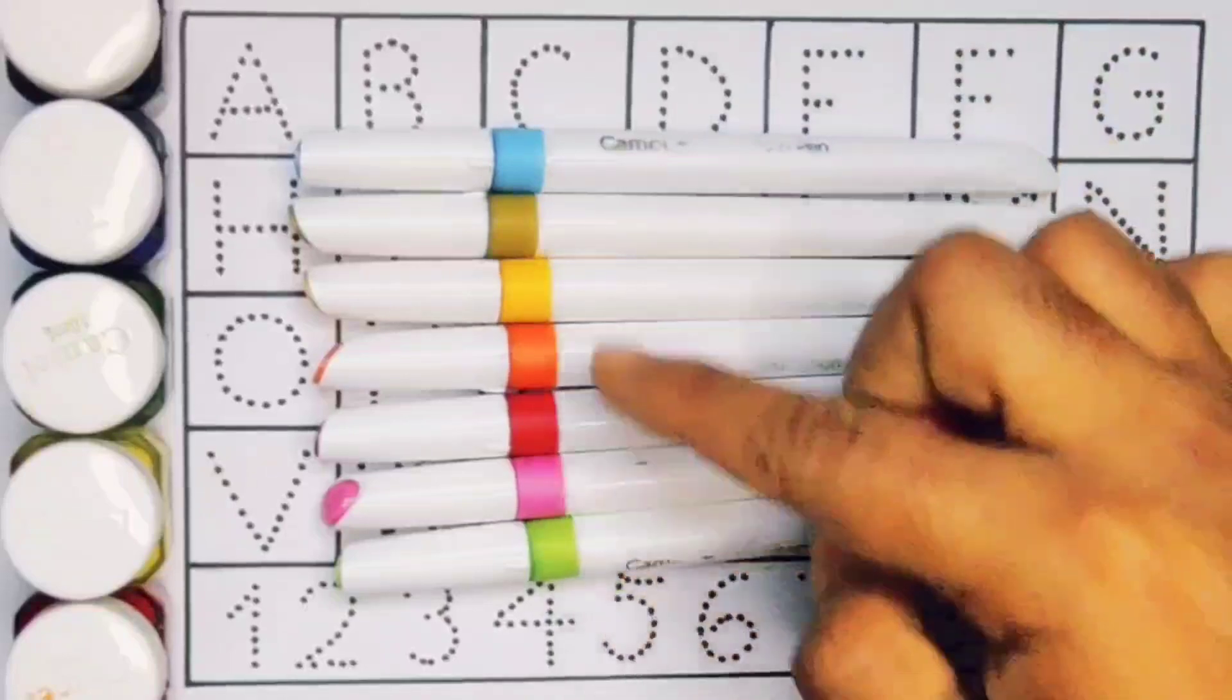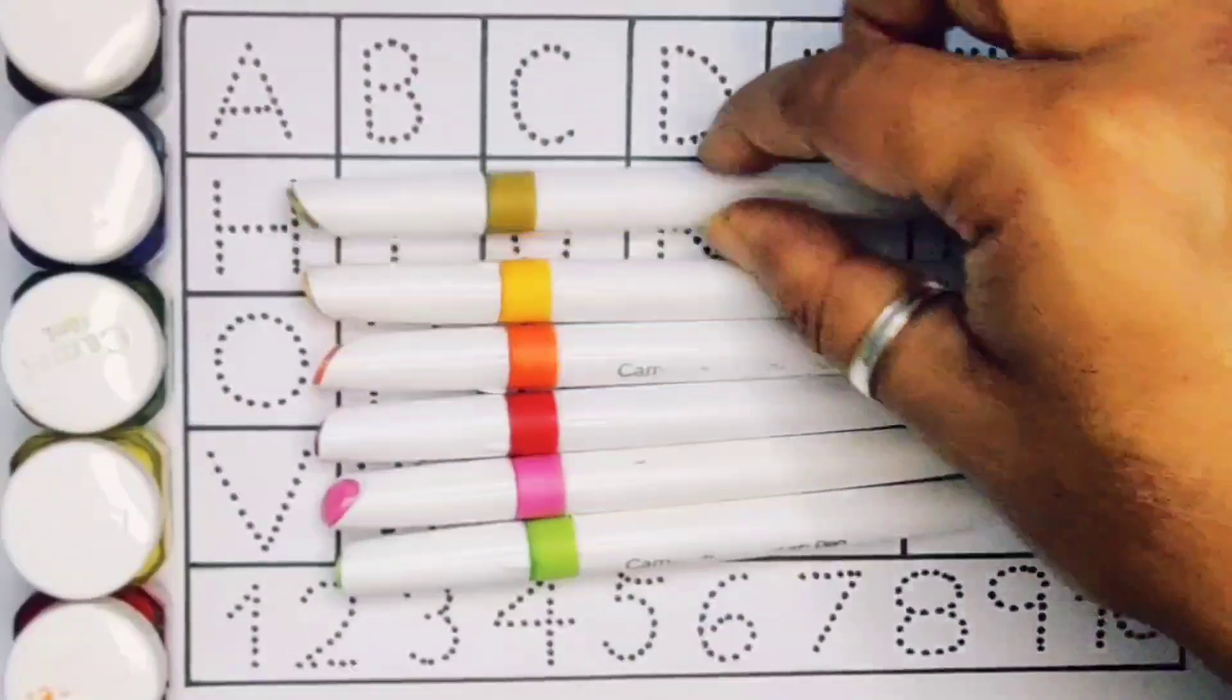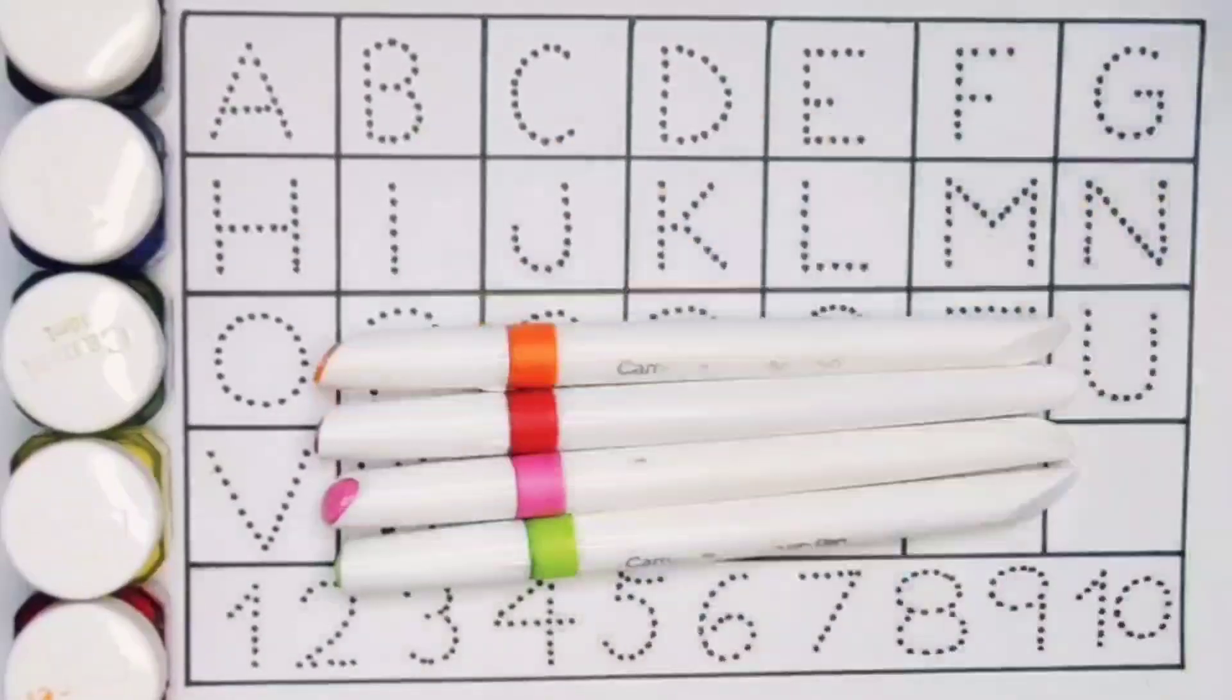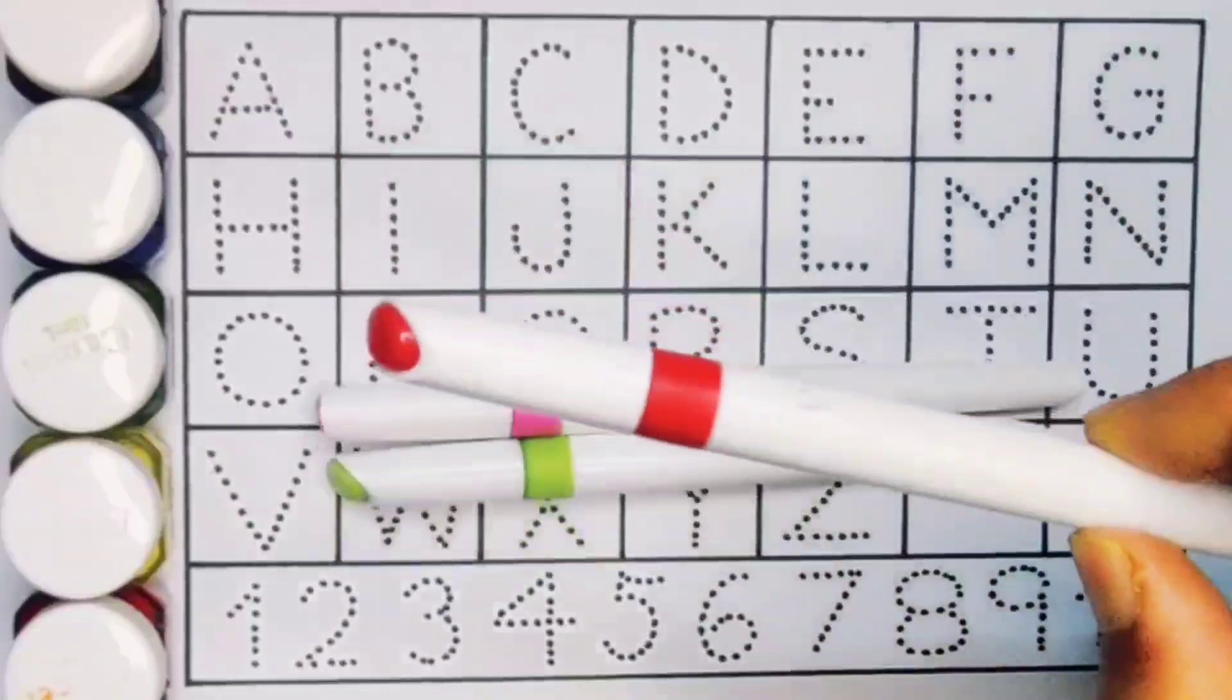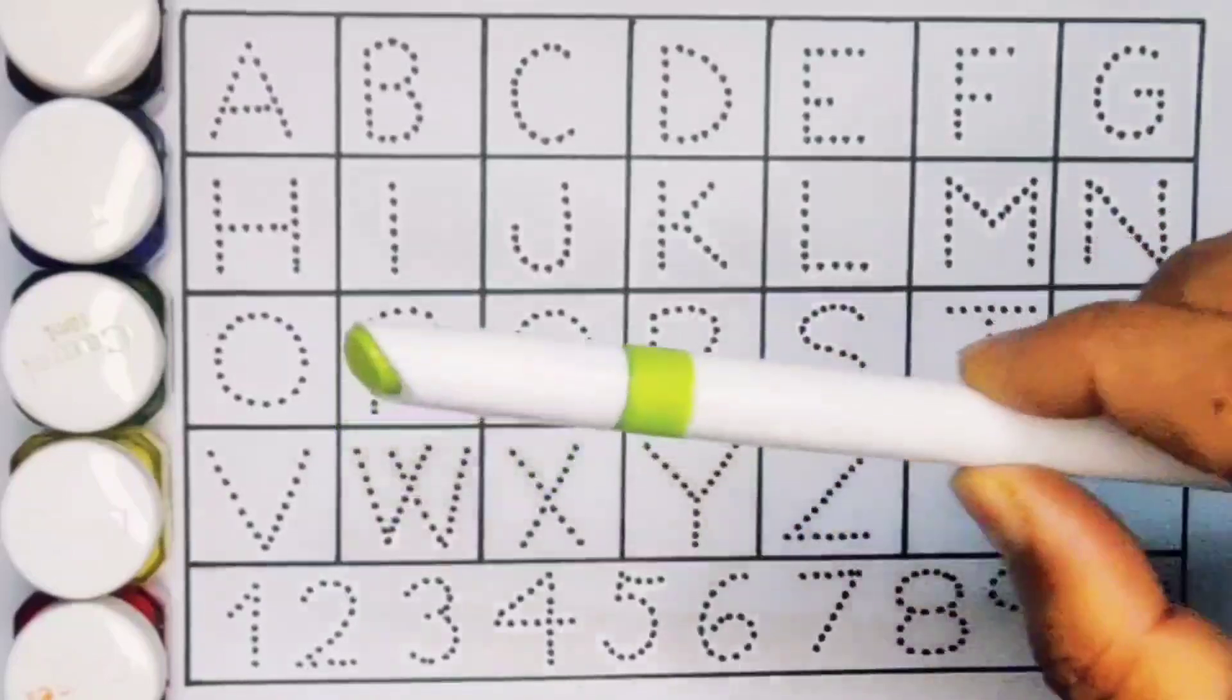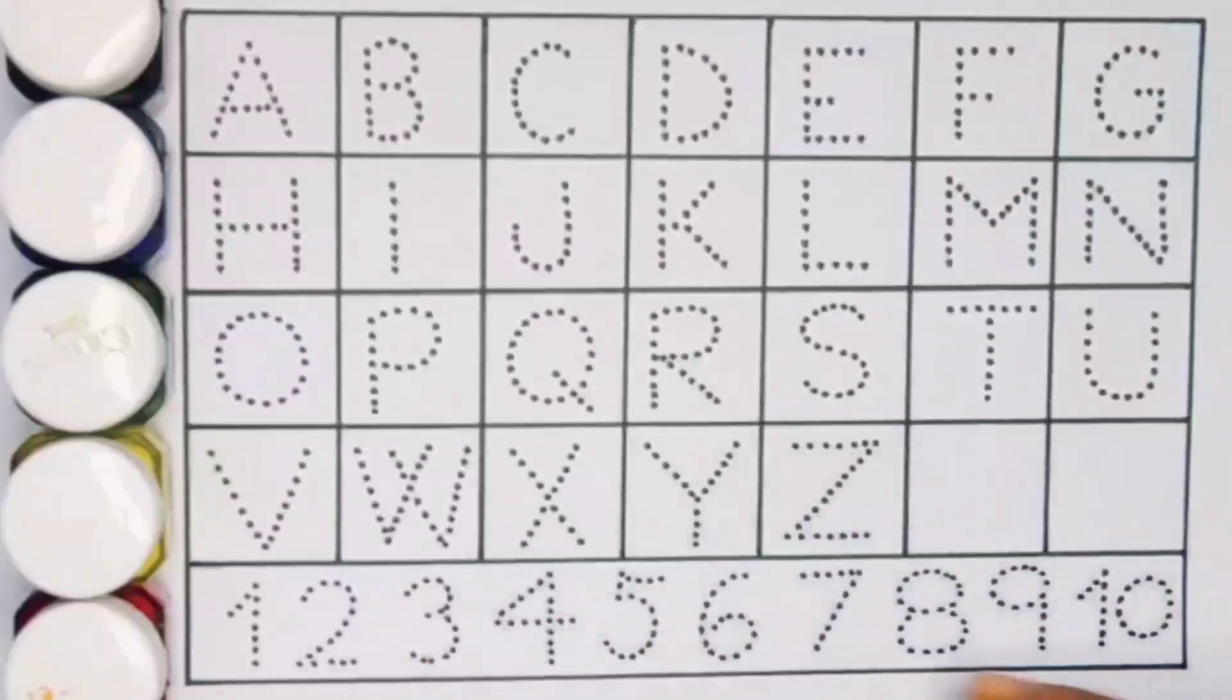First we're going to know the colors name. Sky blue color, olive color, yellow color, orange color, red color, pink color, and light green color. Now let's learn the alphabet A to Z and numbers counting 1 to 10.